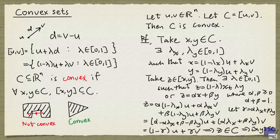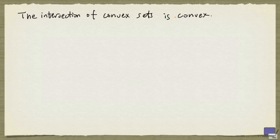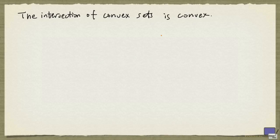One final note: the intersection of convex sets is again convex. It doesn't matter whether you are intersecting infinitely many sets — it can be shown using first principles that the intersection of convex sets is again convex.